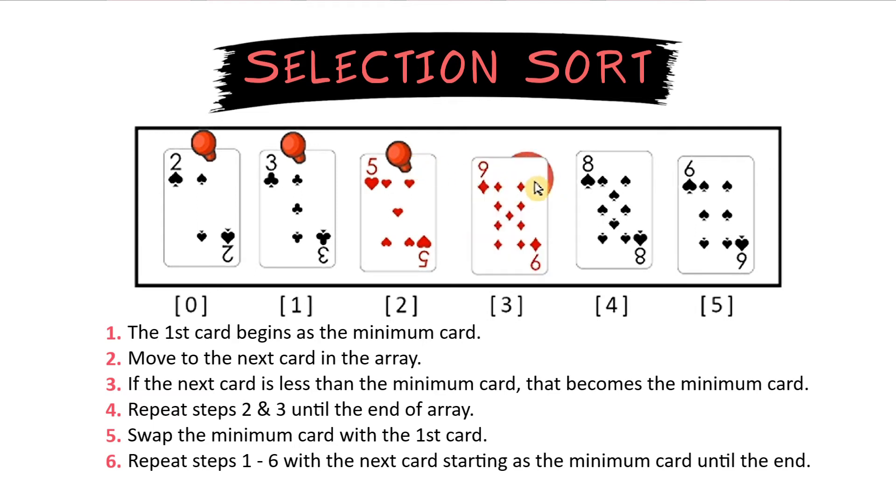Now 9 is the minimum card. We will then check the next card 8 to see if it's less than 9. It is so 8 becomes the new minimum number. Then we move to 6. 6 is smaller than 8 and that is actually the smallest number left. So we will swap 6 with the 9 and now 6 is placed in order.